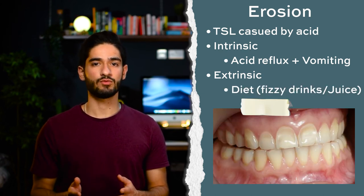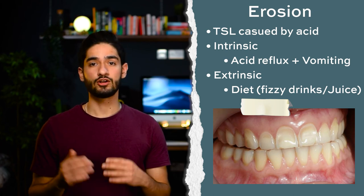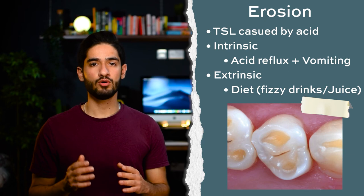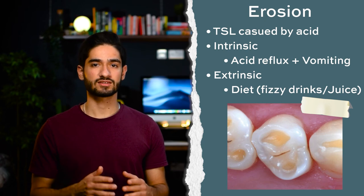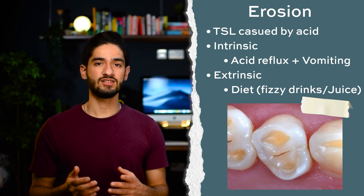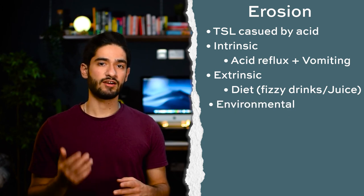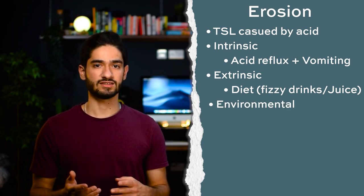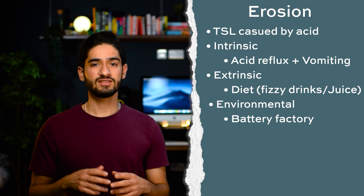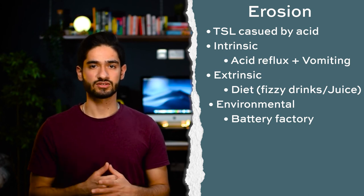Extrinsic erosion patients mostly present with tooth surface loss on the labial surfaces of incisors and the occlusal surfaces of molars. In both types, you might see bowl-like wear facets, sometimes called a ring of enamel, which happens because the dentine wears away at a faster rate than the enamel. There are also environmental sources of acid, like working in a battery factory, though this is much rarer now because of stricter health and safety regulations.